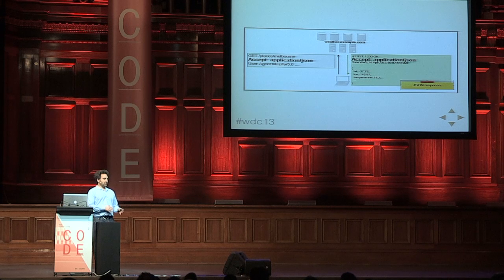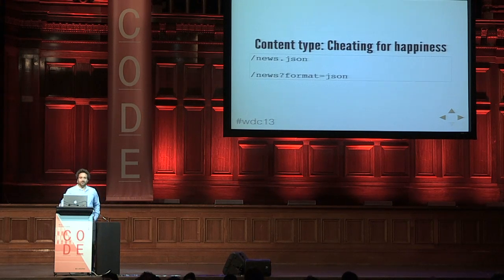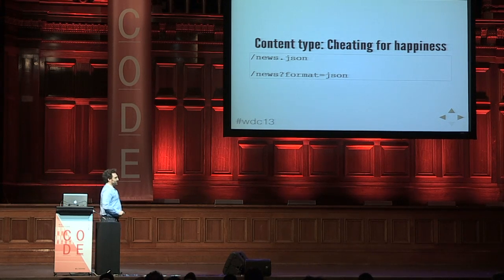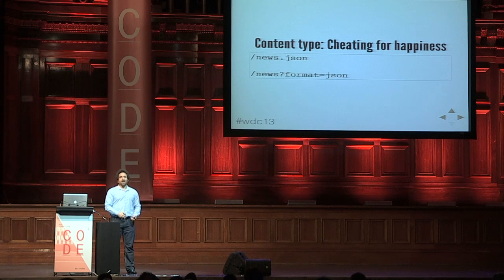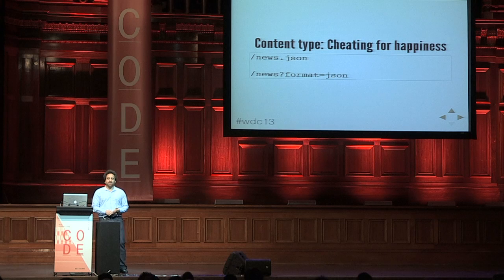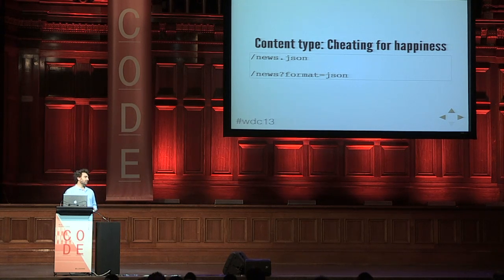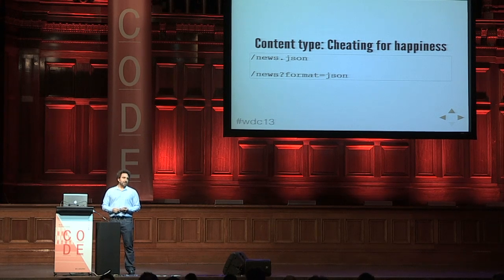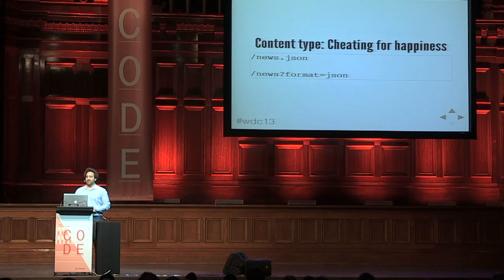It gets a bit more complicated too — there's a process of negotiation where you can give it several content types and the server will come up with the best one it can do if it can't do your first choice. It's also common to have this slightly 'cheating' notation where you just append .json on the URL, or append format=json. Purists don't like this idea because it makes the URI something different — purists like the idea that a URI represents a thing, and it's always the same thing regardless of how you're viewing it. But in practical terms it's really convenient because a great thing about REST is that you can test so much of this just in your browser or with curl.